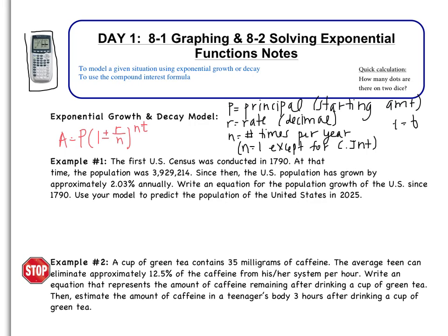And then t is going to be time. Generally, this is years, could be hours, minutes, etc. A is going to be your final amount. So you're going to be asked to find the amount after 10 years, 20 years, 5 hours, 3 days, etc.